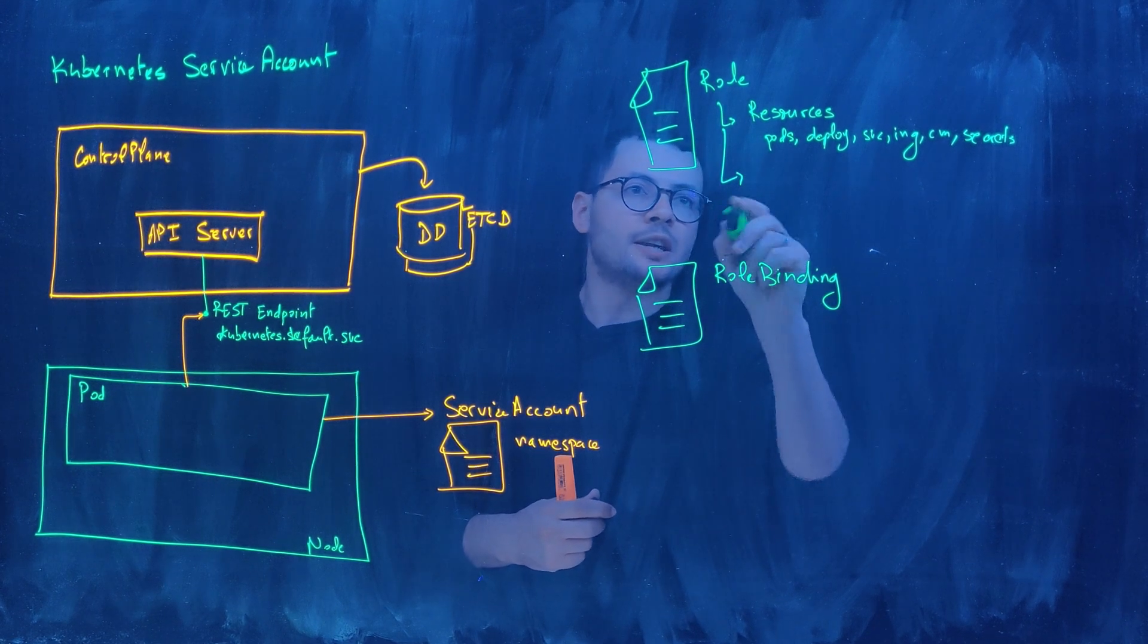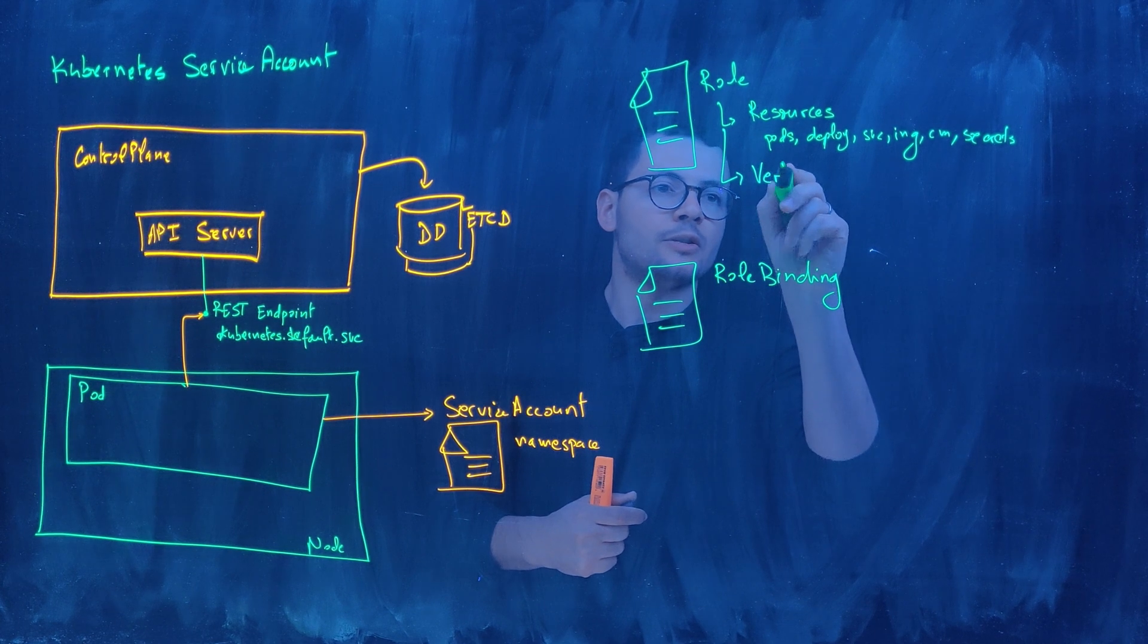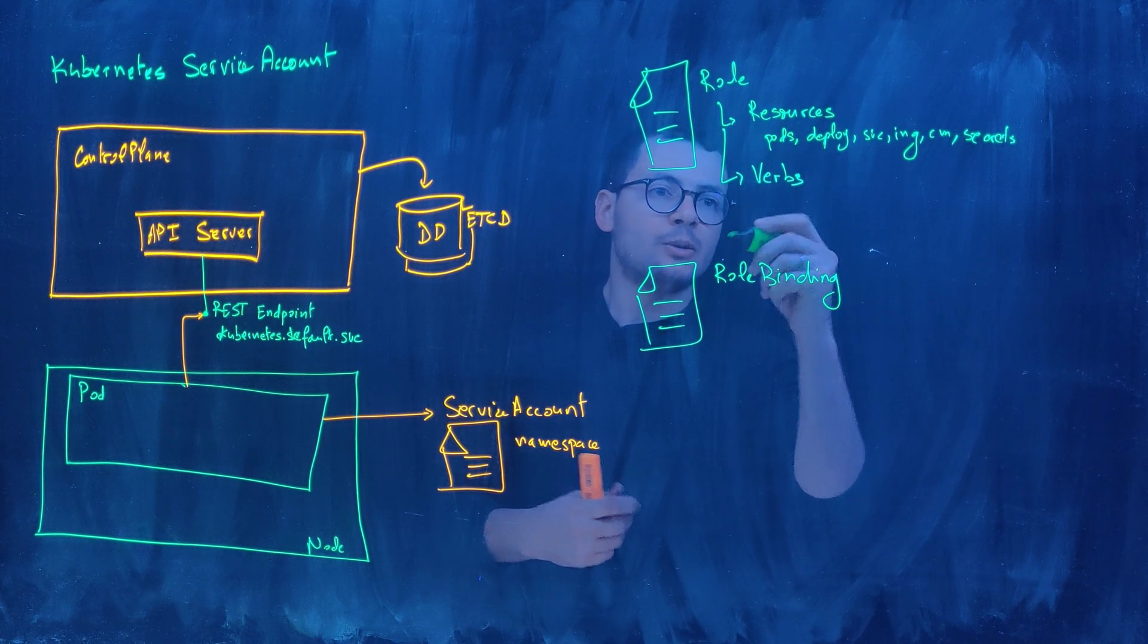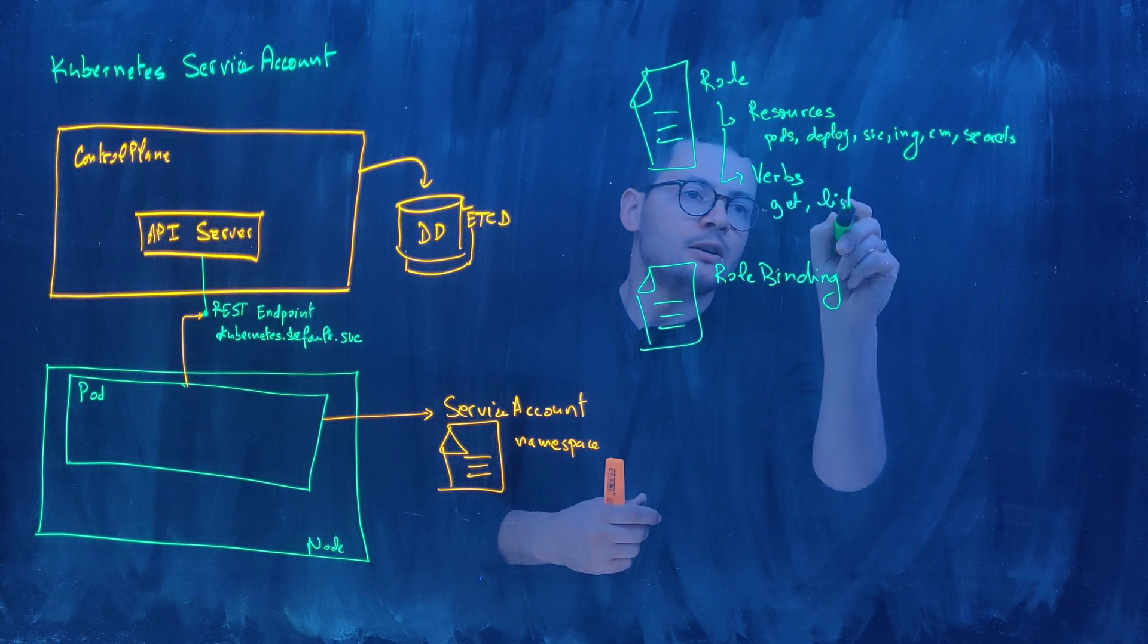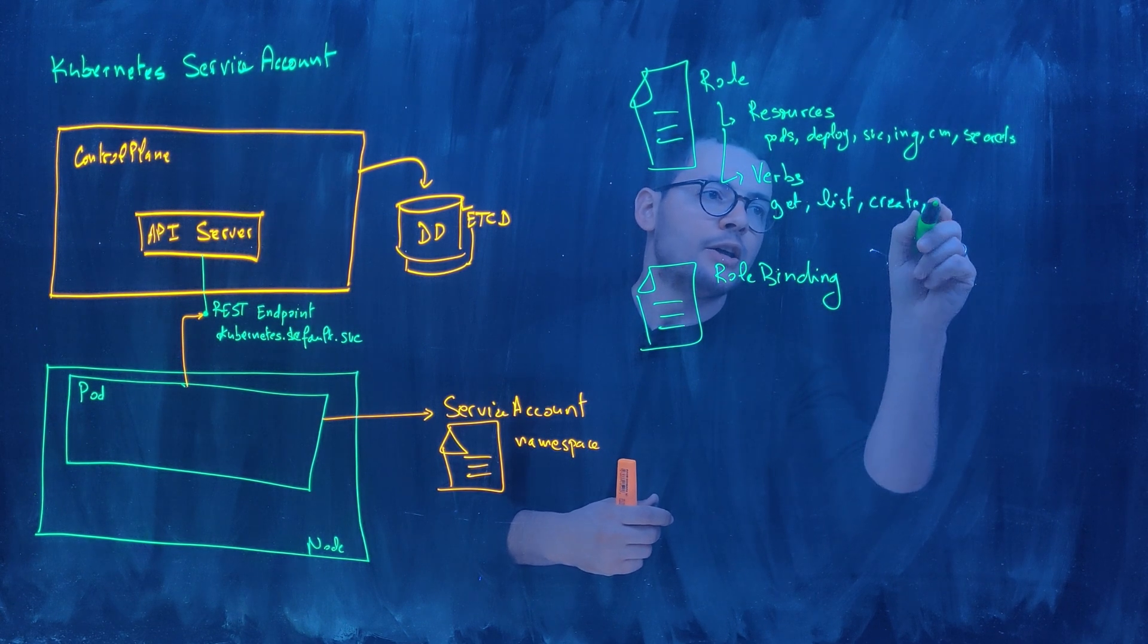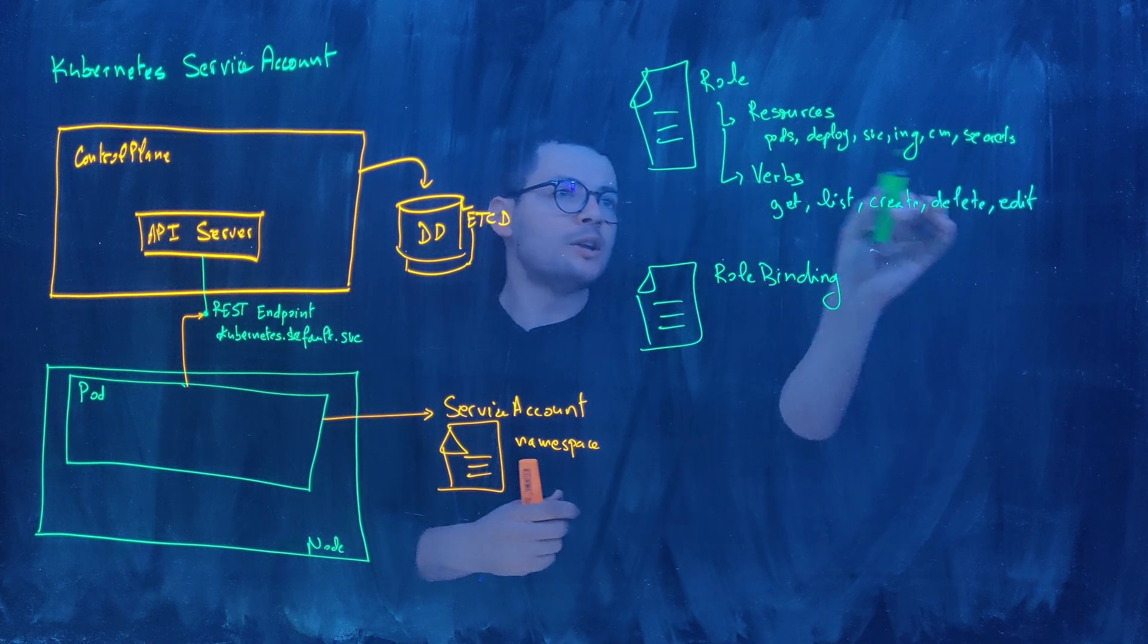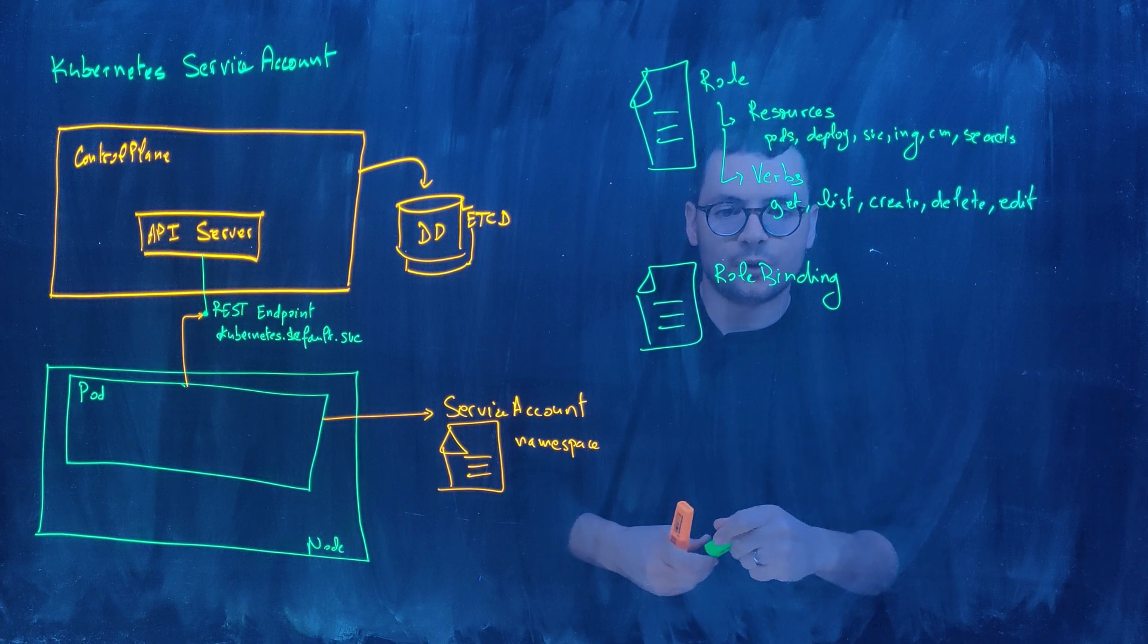And then the second attribute that will describe the role is the verbs. And the verbs will describe what we can do with these pods. So when we do kubectl command line, we can do get pods, we can do list pods, we can do create, we can do delete, we can do edit. So all of these are verbs. And we choose a combination of one or many resources with one or many verbs.